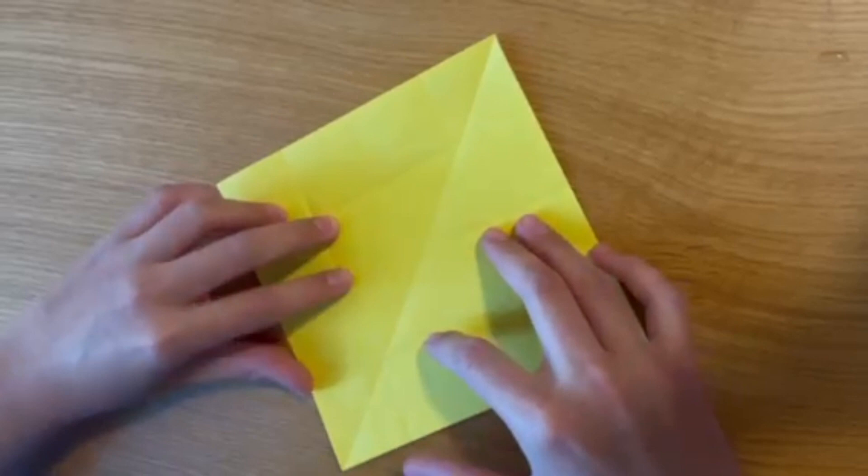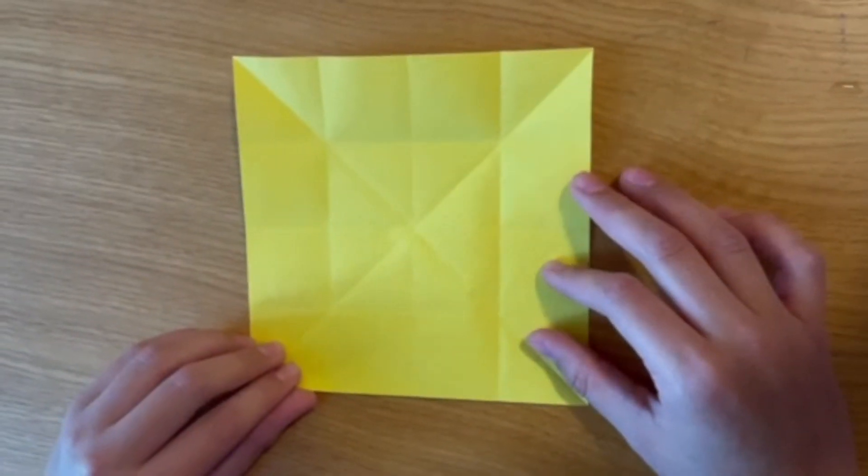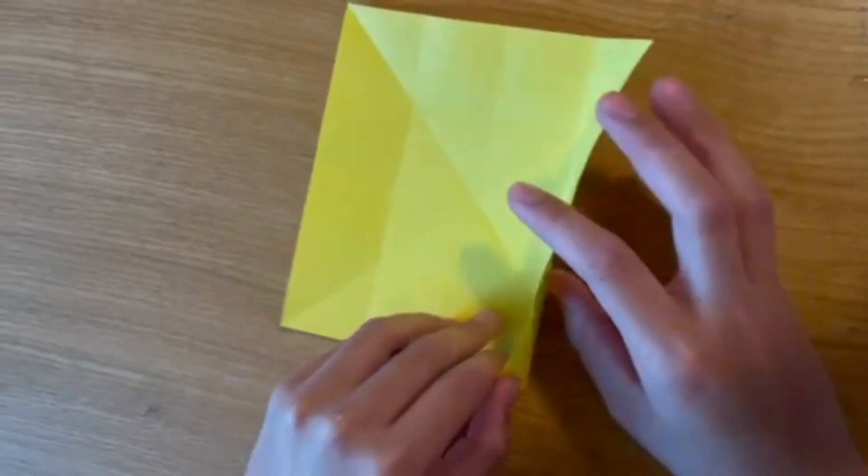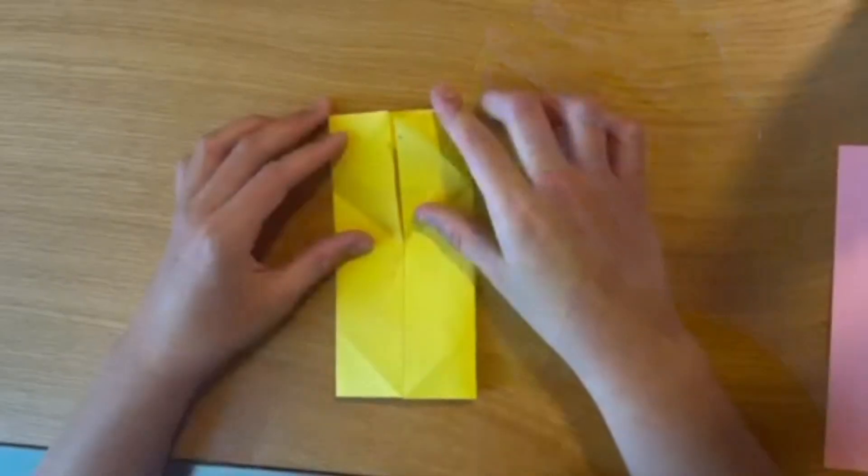Next we're going to open up the piece of paper again and fold two sides towards the middle just like this. Next we're going to take the top part of our paper and open it up and fold it downwards just like that.